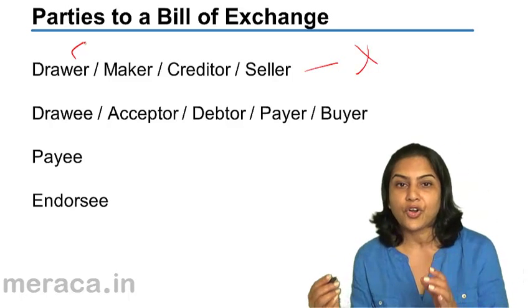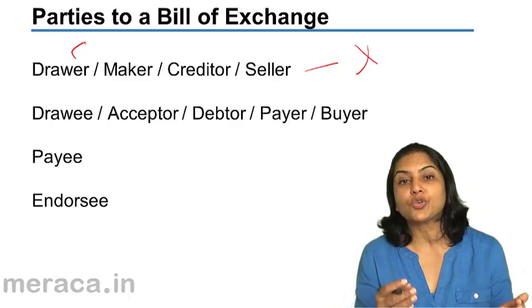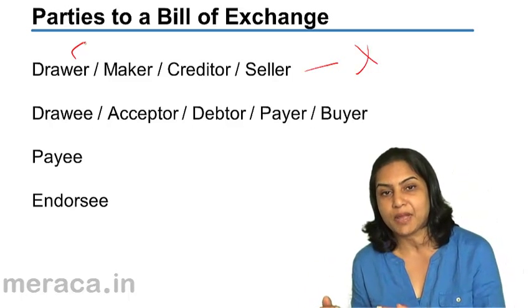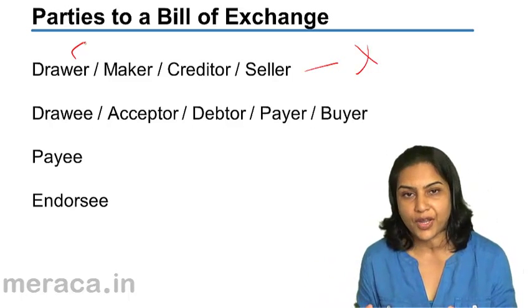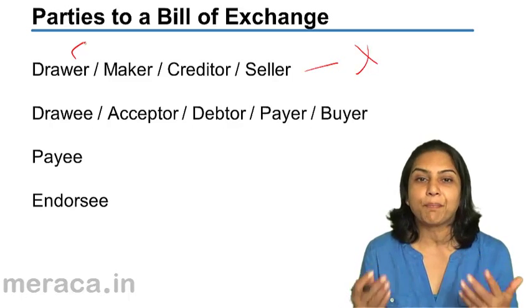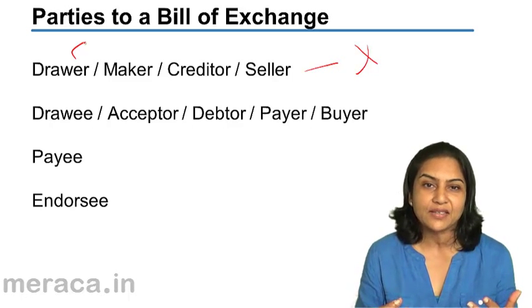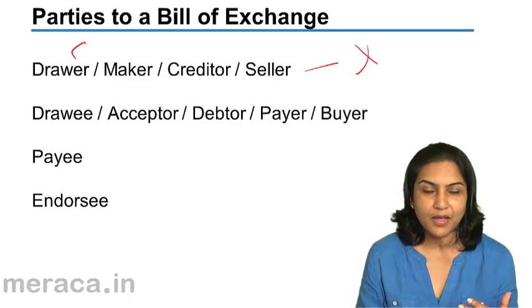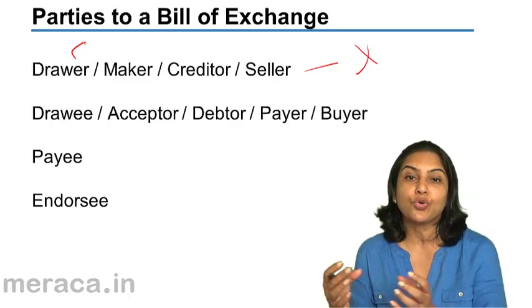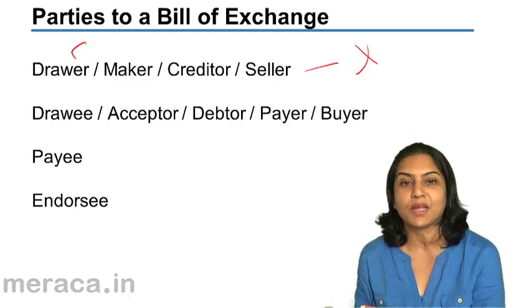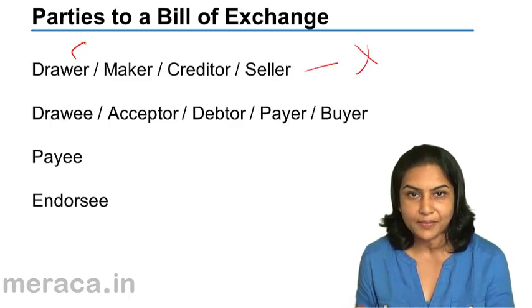Who is a drawee? The person on whom the bill is made is the drawee. Who is a payer? The person who pays is a payer. The person to whom payment is made is the payee.